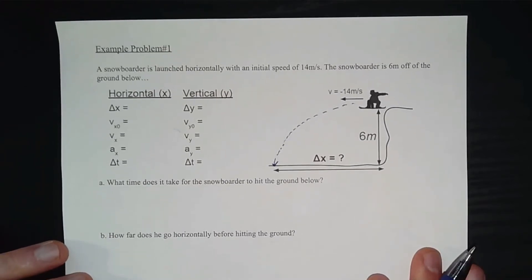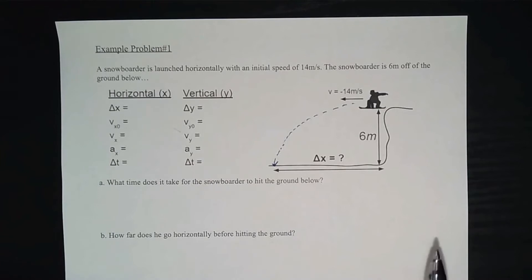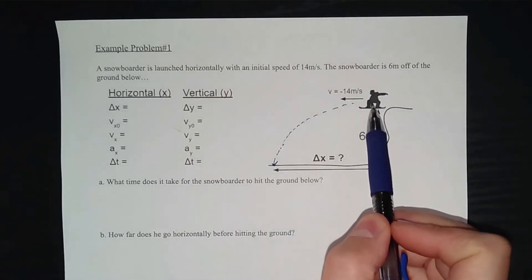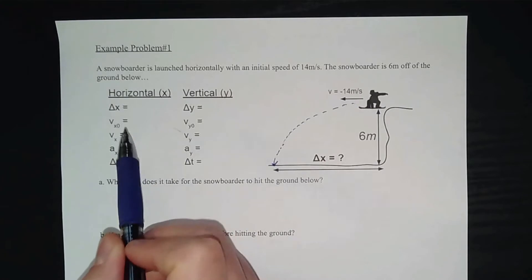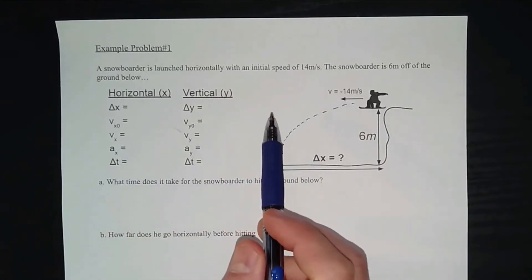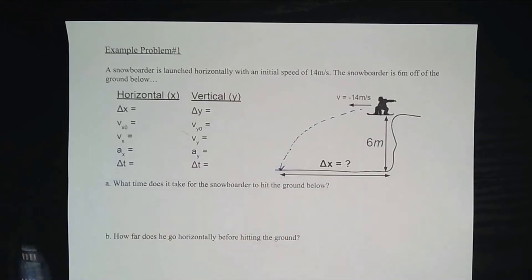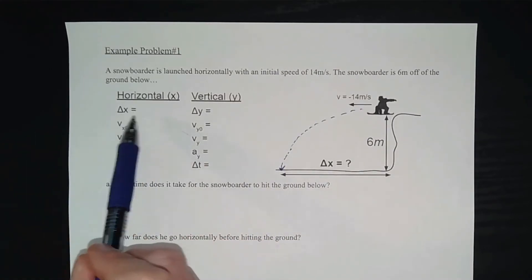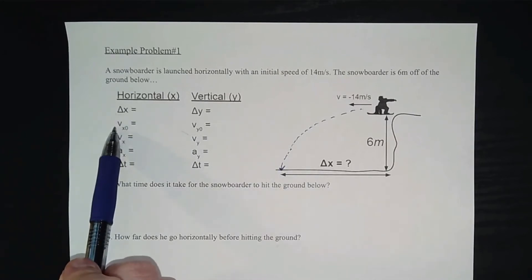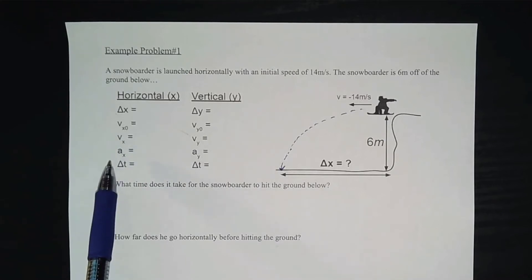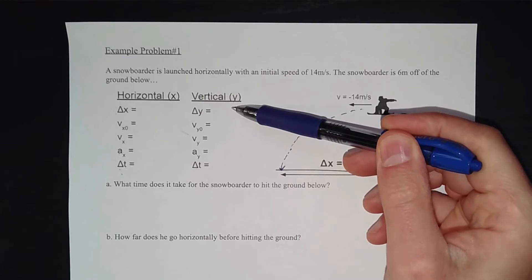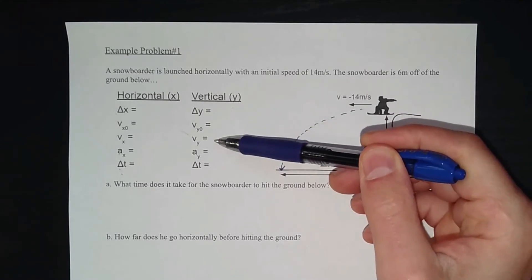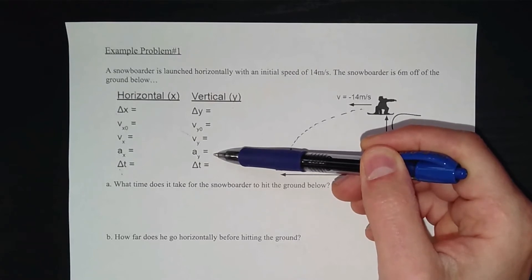For projectile problems we know specific things about how the snowboarder will move horizontally and how they'll move vertically. We write down any given information about the horizontal part of the motion and the vertical part. Horizontally we have: horizontal displacement, initial horizontal velocity, final horizontal velocity, horizontal acceleration, and time. Vertically we have: vertical displacement, initial vertical velocity, final vertical velocity, vertical acceleration, and time.